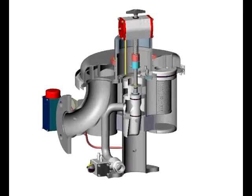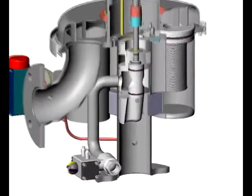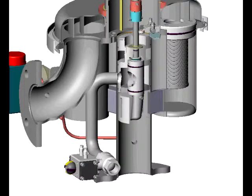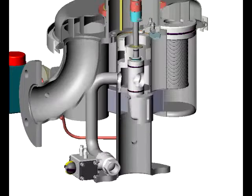To understand how the backwash process works, let's take a partial section through the filter. Now we'll rotate the backwash shoe into the position it would be in to backwash pod 4 in our sectioned view.